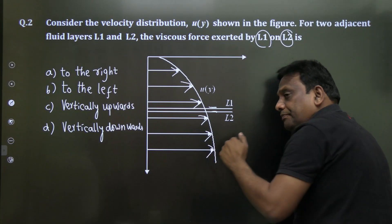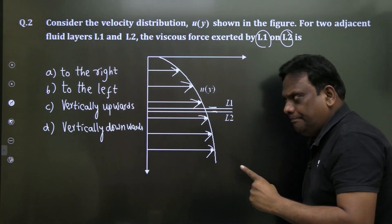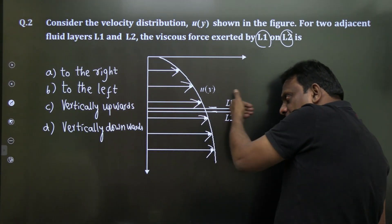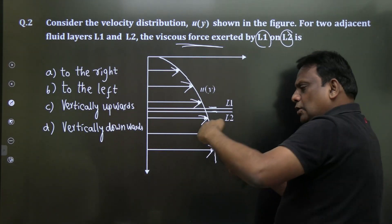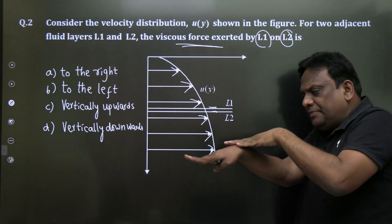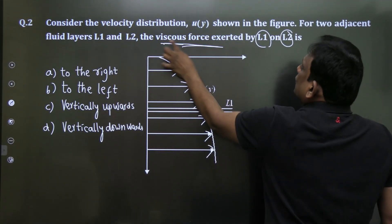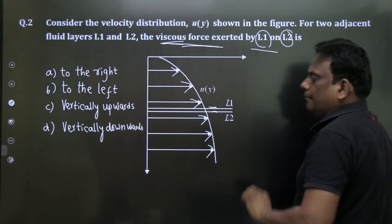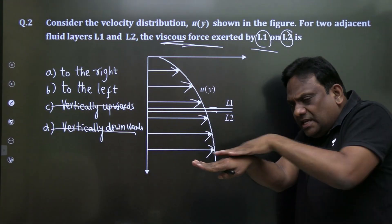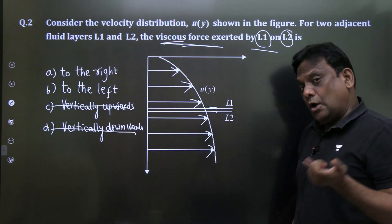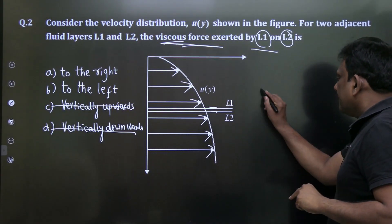Moving in the downward direction, the velocity is increasing. The flow is purely in the x-direction, so viscous forces will also be exerted in the x-direction only — not vertically upward or downward. We need to determine whether the force is in the left or right direction.